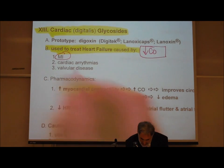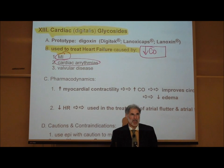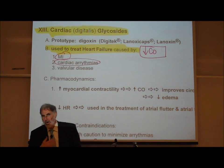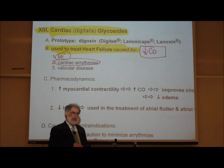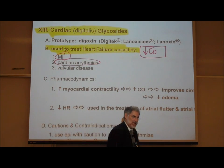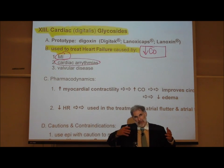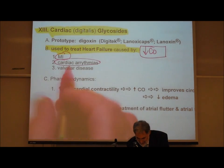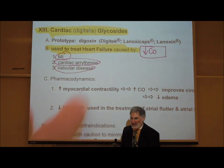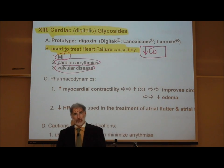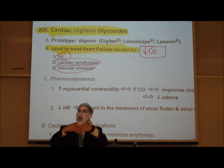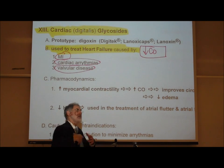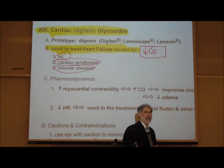Another cause is an arrhythmia, a heart arrhythmia. If somebody has an abnormal electrical arrhythmia of their heart where their heart doesn't beat normally, that may make their cardiac output less than normal. Another cause of a drop in cardiac output is valve problems. When those valves in the heart don't open and close the way they're supposed to, that results in a decreased cardiac output.